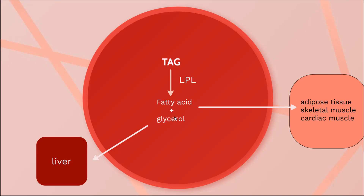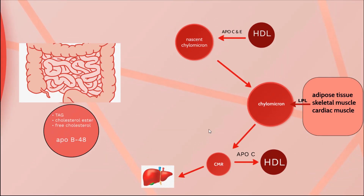The fatty acids enter into the cell, where they are stored in adipose tissue and used up as energy in skeletal muscle and cardiac muscle. On the other hand, glycerol goes into the liver. As the major portion of triacylglycerol is degraded, the chylomicron reduces in size.